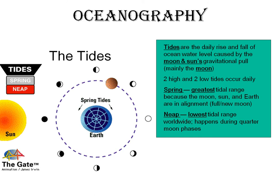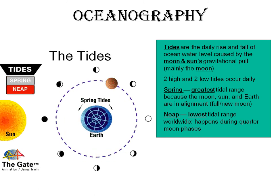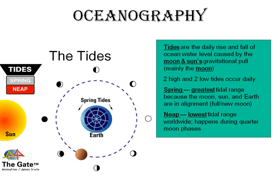We call it a spring tide when we have the greatest tidal range, and a neap tide because of the lowest tidal range.